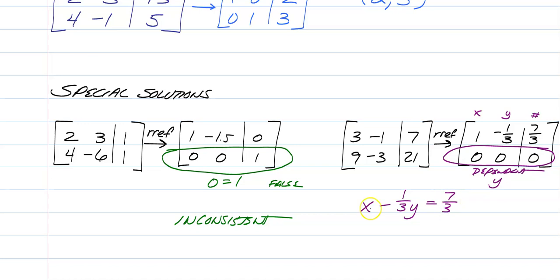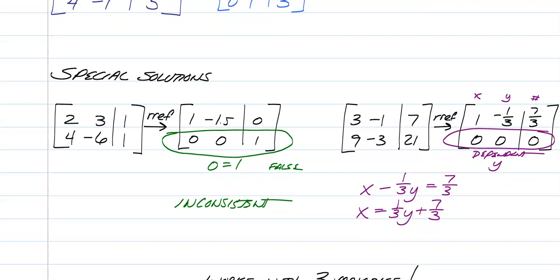So we actually have a 1x minus 1 third y is equal to 7 thirds. And now you just have to solve for x, so add 1 third y to both sides, and we get x is equal to 1 third y plus 7 thirds. And that's going to give us a solution, which means this is a dependent system, and all of our answers are going to be x is 1 third y plus 7 thirds, comma, and then we just have our y. And that's how you would write your final answer.